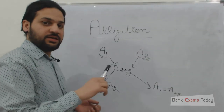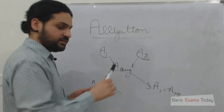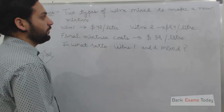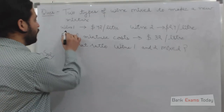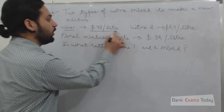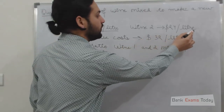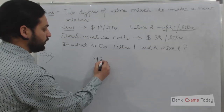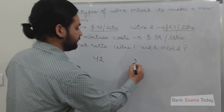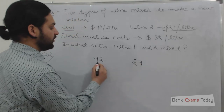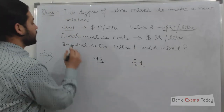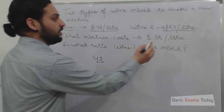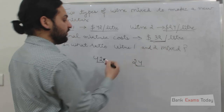I will explain this method with an example. Let's take a simple example: two types of wine are mixed to make a new mixture. Wine 1 costs 42 dollars a litre and wine 2 costs 24 dollars a litre. So we place 42 here and 24 here. These two types of wine are mixed, and finally the mixture costs 32 dollars a litre, which is the weighted average of both.